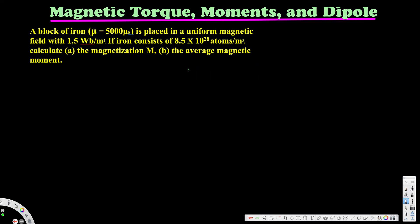Let's look at this problem. The question asks: a block of iron with μ equal to 5000μ₀ is placed in a uniform magnetic field of 1.5 webers per meter squared. If iron consists of 8.5 times 10 to the power of 28 atoms per meter cubed, part A asks us to find the magnetization, and part B asks us to find the average magnetic moment.